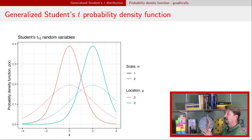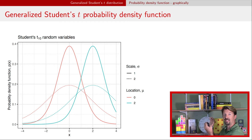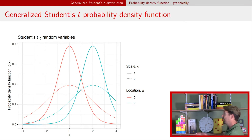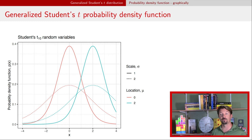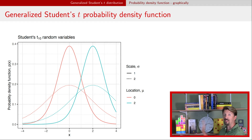Here are four examples of generalized Student's t probability density functions, all with 10 degrees of freedom. The red solid line is centered at zero with a high peak — that's the standard Student's t with location zero and scale one. Increasing the scale parameter gives the red dashed curve, which lowers the peak and spreads out the distribution, increasing the variance. Changing the location parameter shifts the distributions — we go from the red curves to the bluish PDFs. The location parameter shifts the distribution toward positive or negative values depending on its sign.